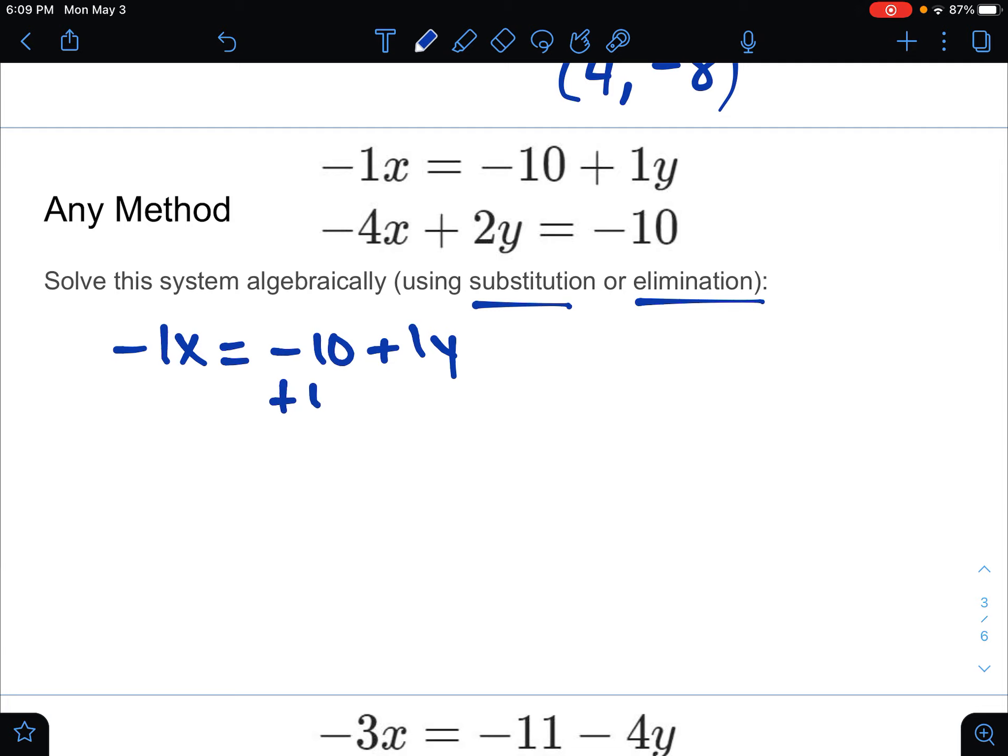So I'm going to move the 10 to the other side. That way, I have negative 1x plus 10 equaling 1y, and that's just y, or 1y, same thing.